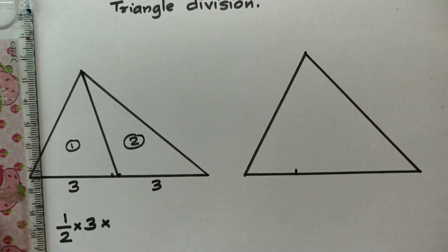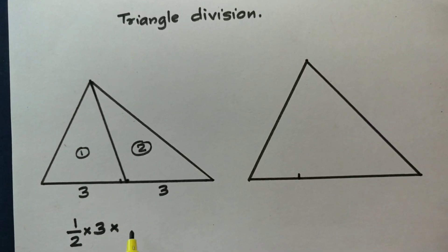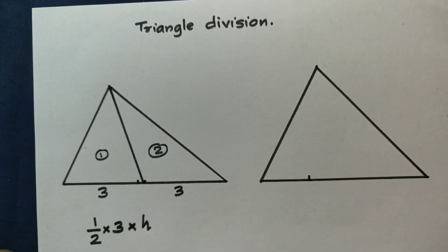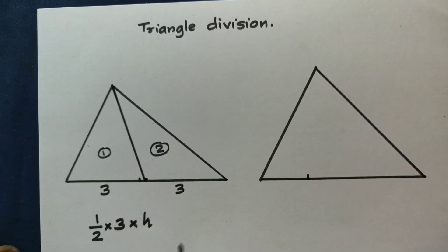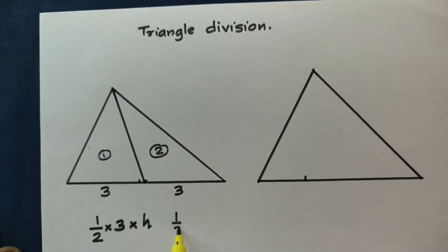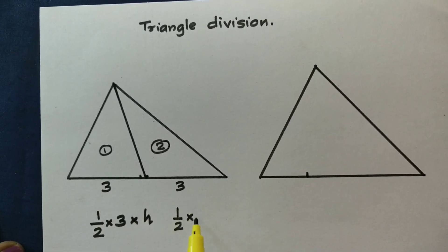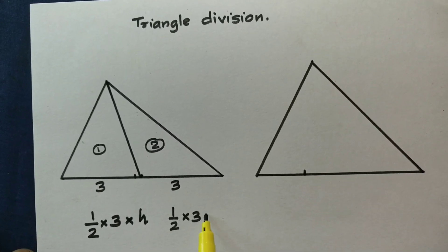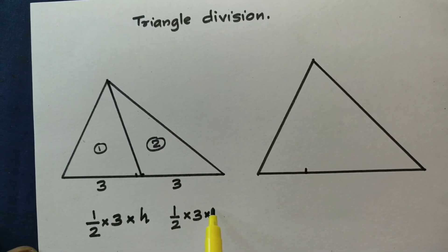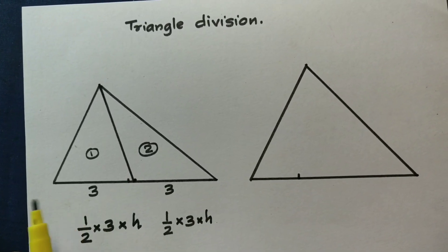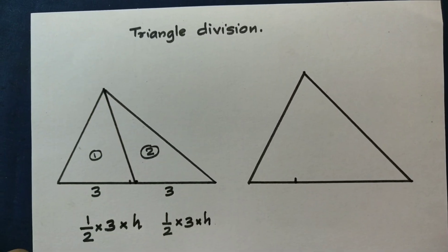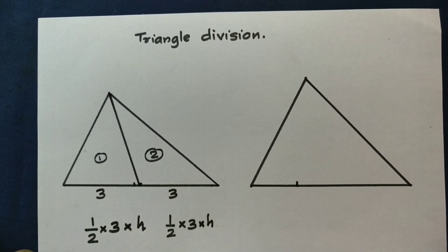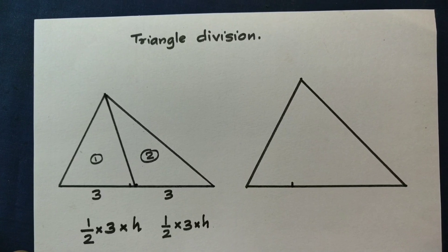Here is the perpendicular distance. This is the perpendicular distance. This region is a triangle: half into base, this is the perpendicular distance. In this class, the perpendicular distance from this vertex applies to each triangle.